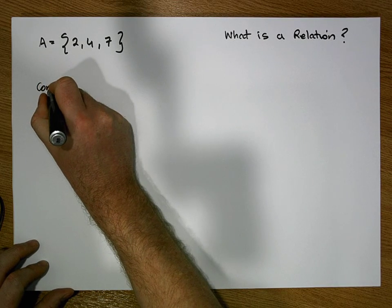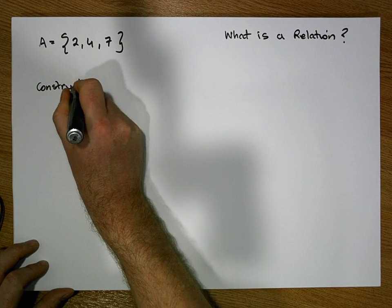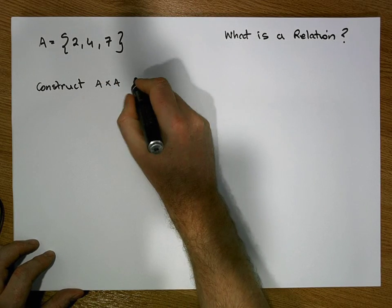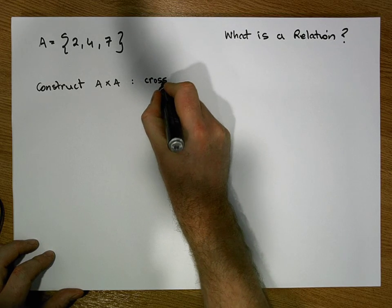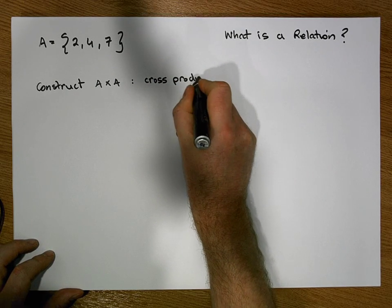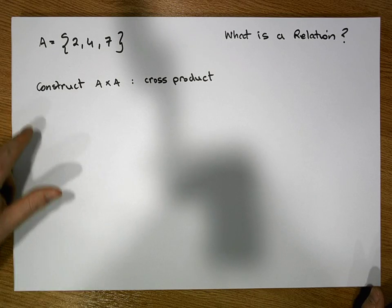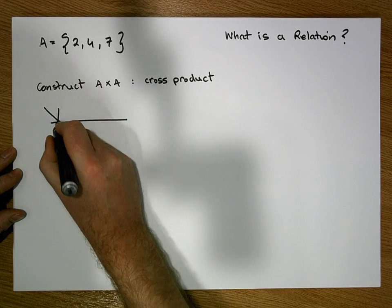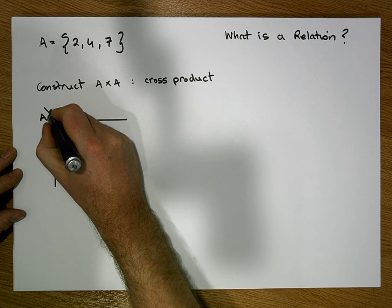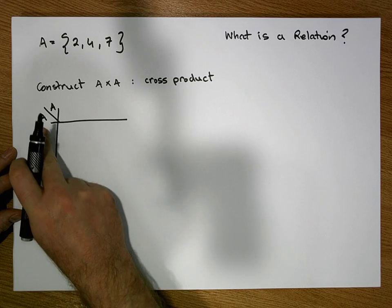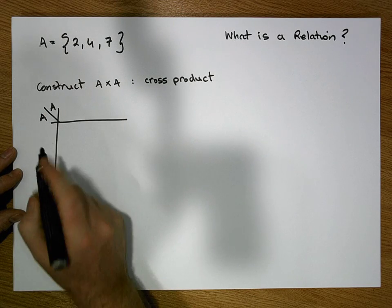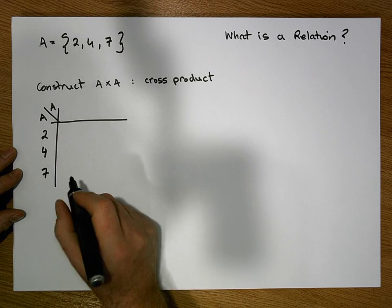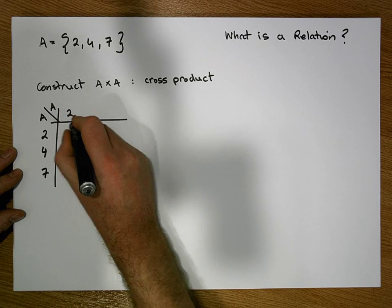Let's construct what's known as the cross product of A with itself — A cross A, also called the Cartesian product of A with itself. To construct it, let's make a little table with A listed down the first column and A across the first row. The values of A are two, four, and seven listed both down and across.